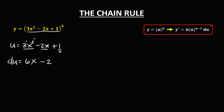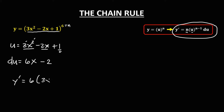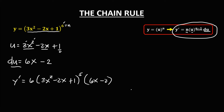To find the derivative using the formula: y prime equals n, and n is the exponent which is 6, times u — so u is (3x squared minus 2x plus 1) — to the power n minus 1, so 6 minus 1 equals 5, then times the derivative of u, which is 6x minus 2.